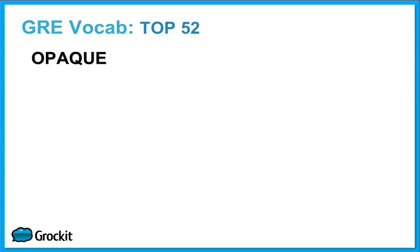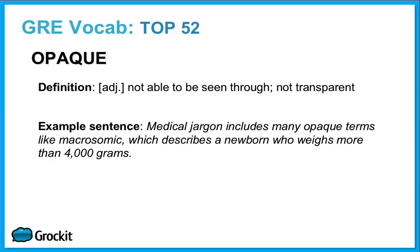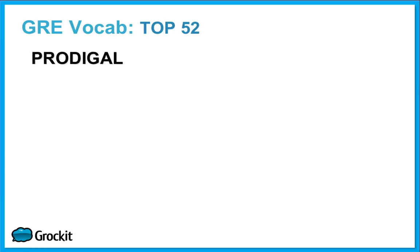Our seventh word is opaque. Opaque is an adjective. It means not able to be seen through, or not transparent. Medical jargon includes many opaque terms like macrosomic, which describes a newborn who weighs more than 4,000 grams. Synonyms: non-transparent, obscure, and unclear.